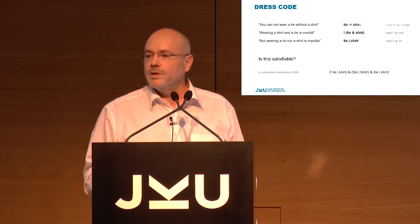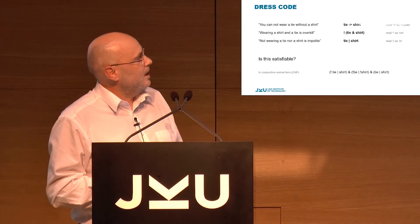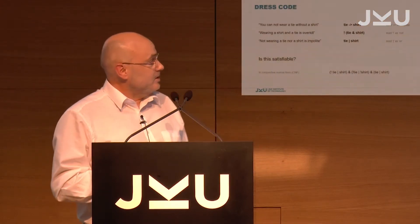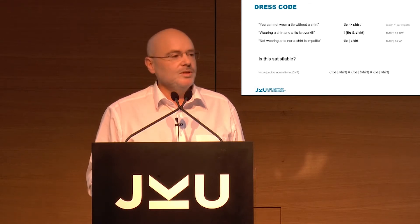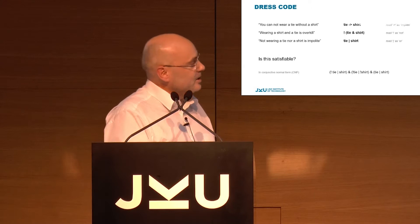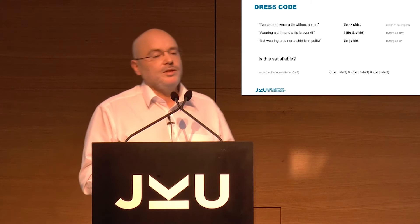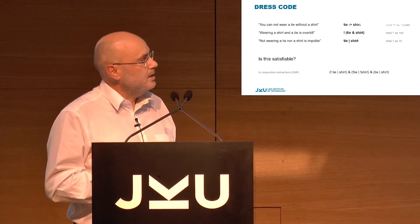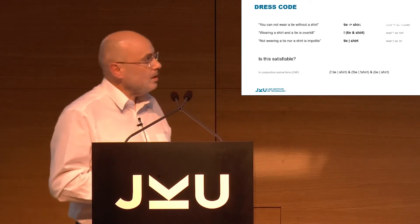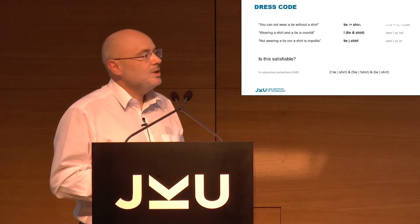Constraint one: you cannot wear a tie without a shirt — it would look silly. Constraint two: wearing both a tie and a shirt is overkill, which definitely applies to computer scientists. Constraint three: wearing neither a tie nor a shirt is impolite. In logic, the first becomes 'tie implies shirt,' meaning if tie is true then shirt must be true. The second says it's not the case that tie and shirt are both true. The third says at least one of tie or shirt must hold.